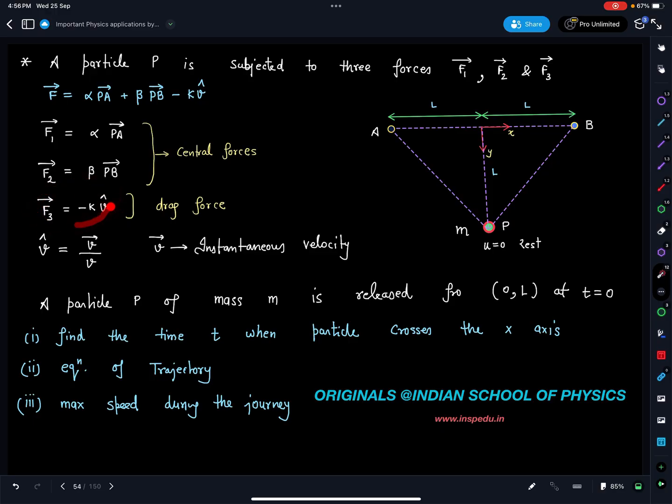So here it's a drag force which is constant in magnitude, like a friction force, whereas if you look at this particular force, it looks like spring force with zero natural length. These are central forces and that was the idea behind this problem. There were three parts given: particle P of mass m is released from point (0, L). We have to find the time after which the particle crosses the x-axis, equation of trajectory, and the maximum speed during the journey.